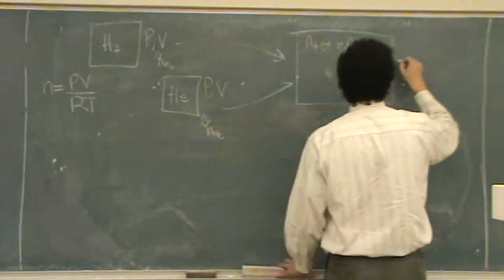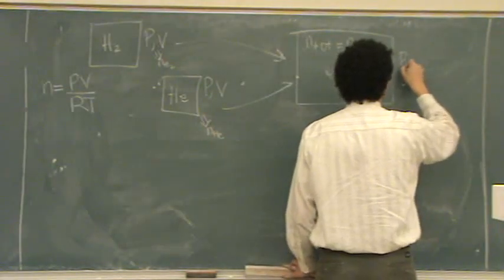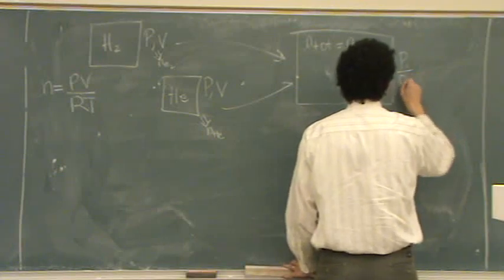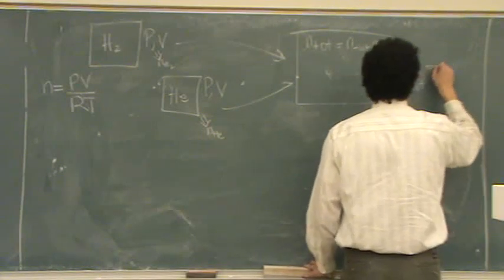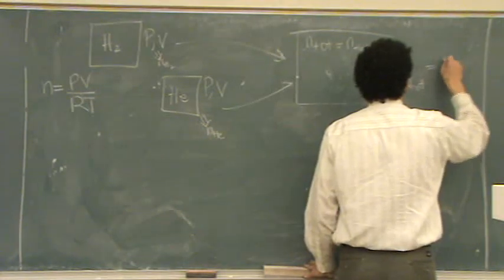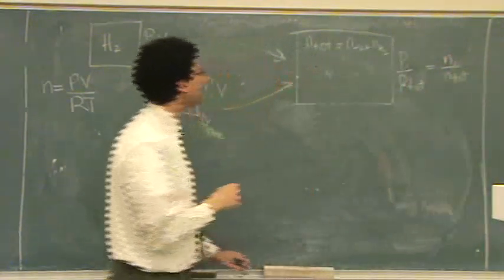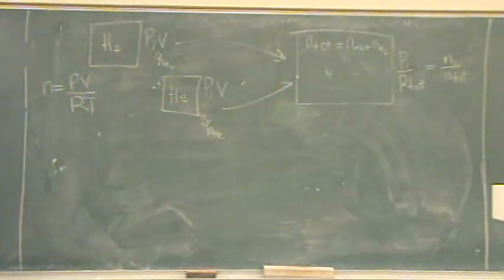And then next, I would start to think Dalton's law. So P1 over P total equals N1 over N total. So at this point I have all the moles, everything on the right. I have my individual moles and the total moles.